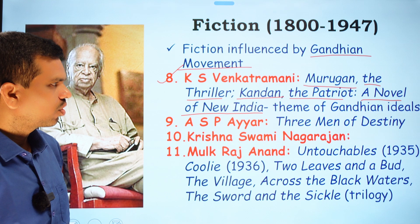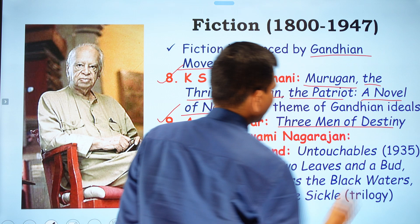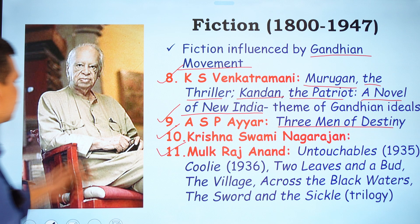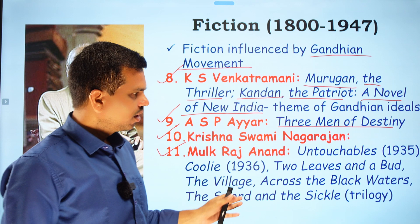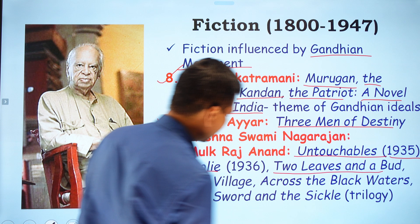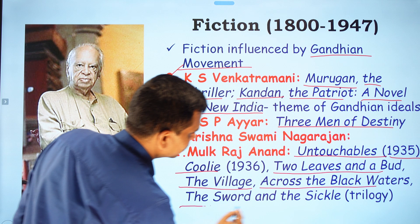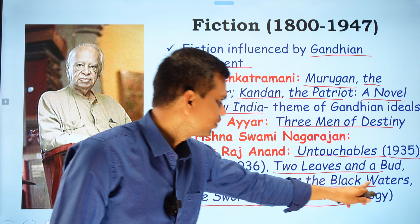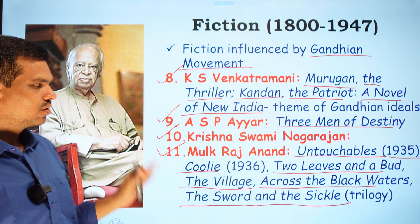Other fiction writers include A.S.P.'s Three Men of Destiny, and Krishnaswami Nagarajan. Mulk Raj Anand is a very famous novelist whose works include Untouchable (1935), Coolie (1936), Two Leaves and a Bud, The Village Across the Black Waters, and The Sword and the Sickle — the last three forming a trilogy.